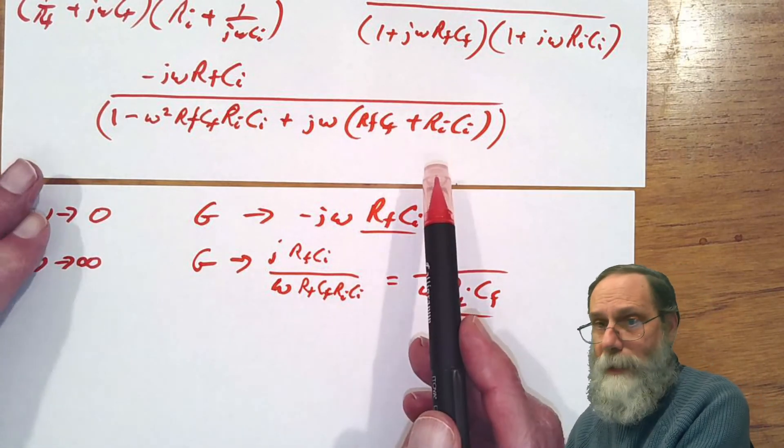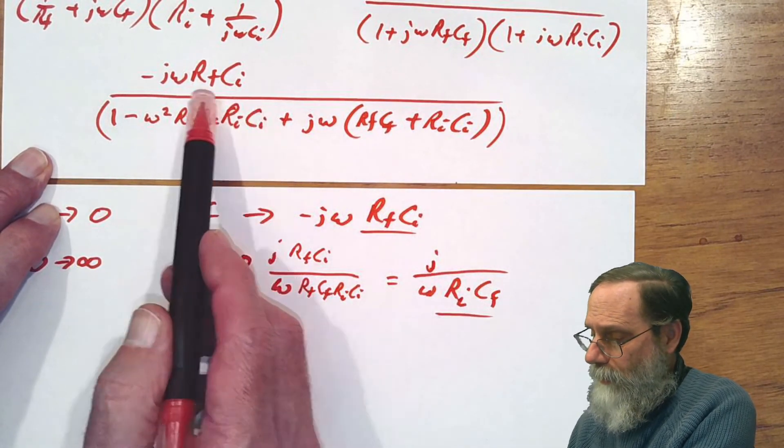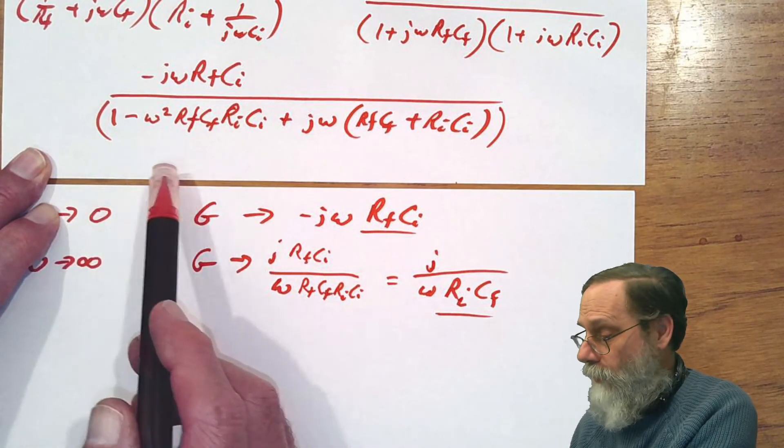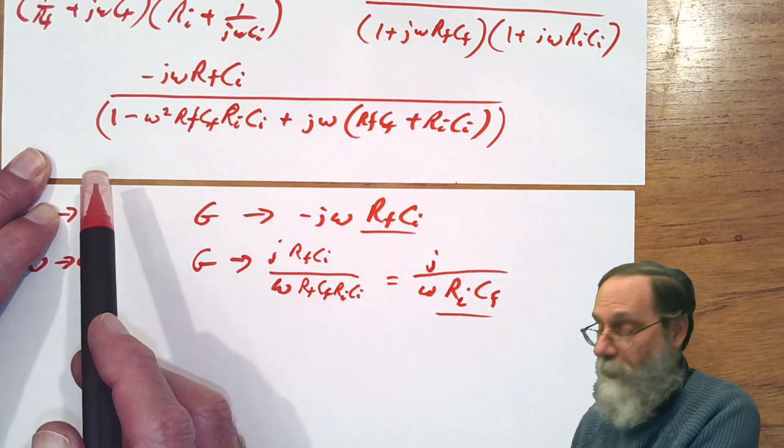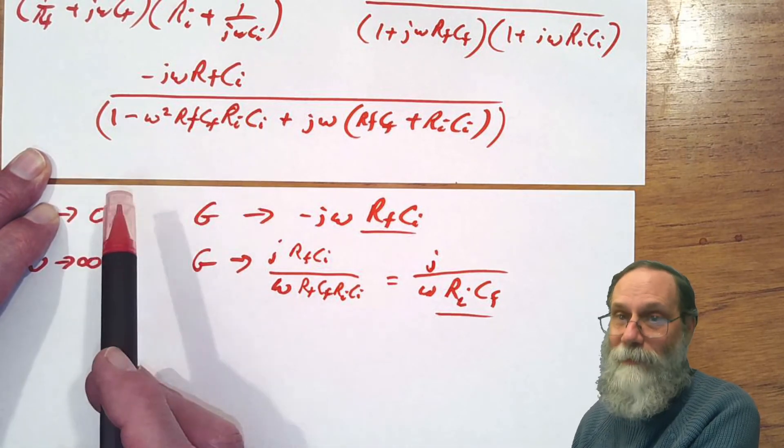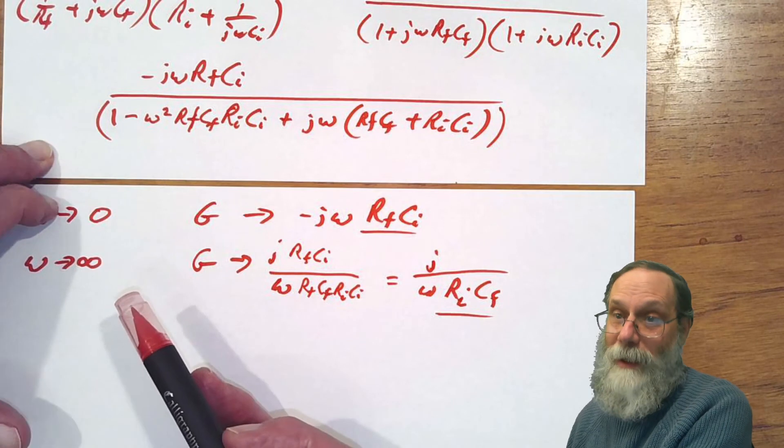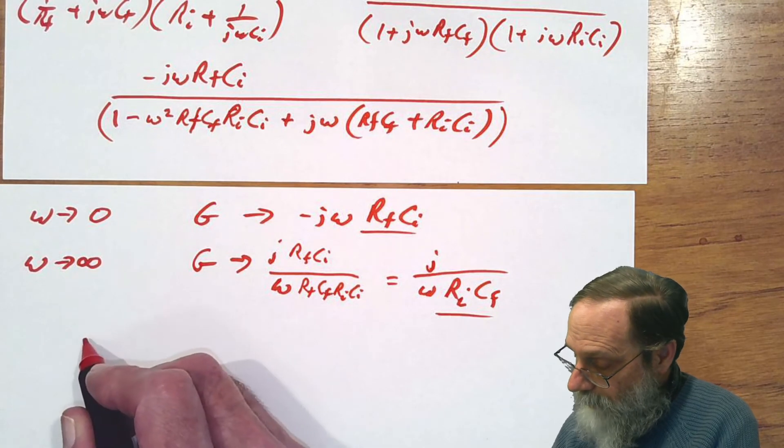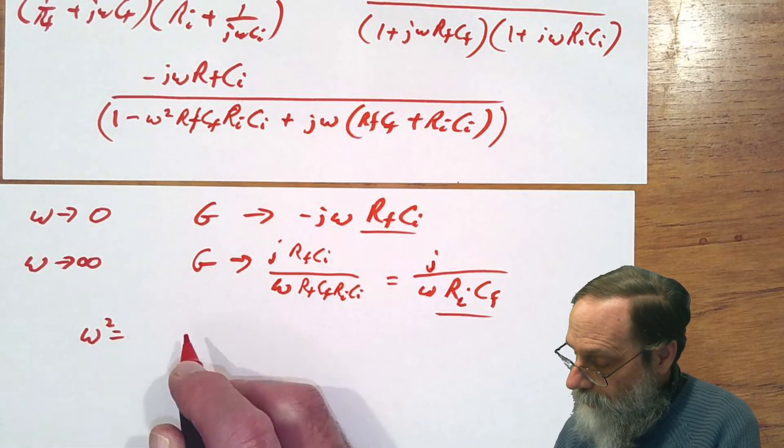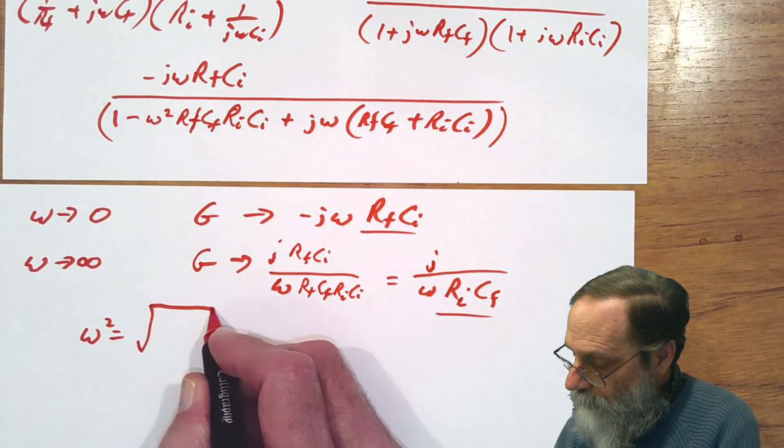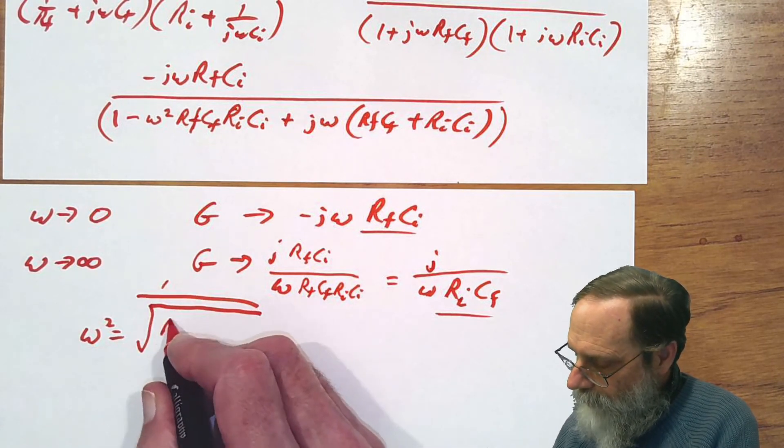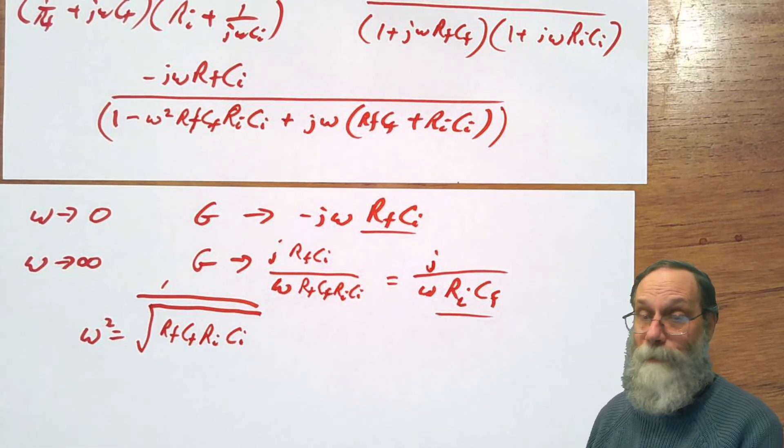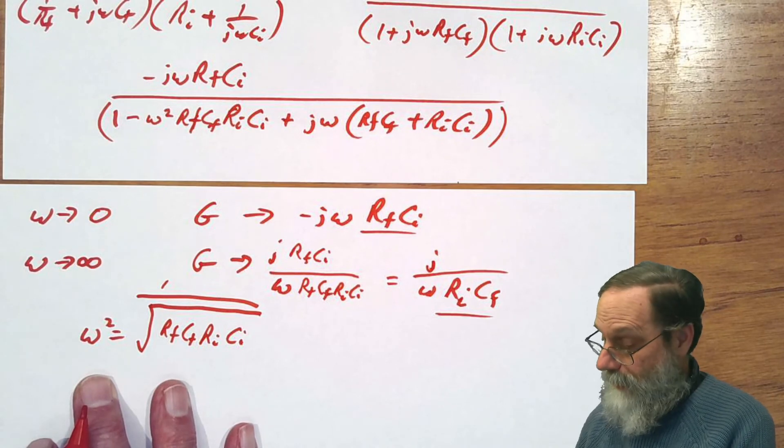What about the peak? Where the peak is going to occur is where the real term here goes to zero. I'm not going to derive that for you, I'm just asking you to take my word on it, but it is possible to derive it. If you really want to do it, you can take derivatives with respect to omega and find out where it becomes zero. And so what you have then is that omega squared is equal to one over square root of Rf Cf Ri Ci, where the peak occurs.